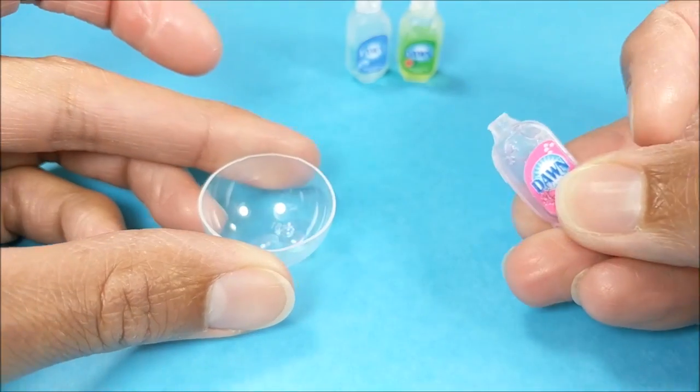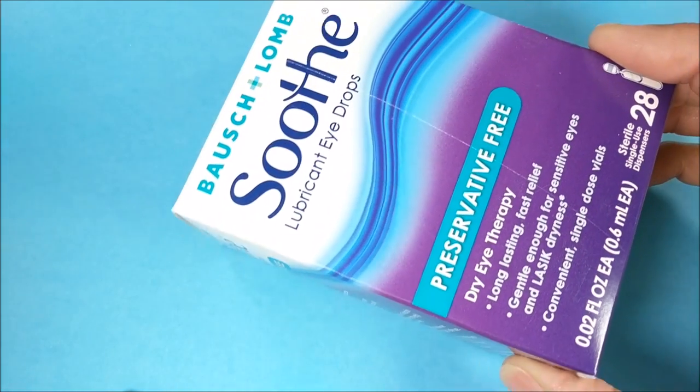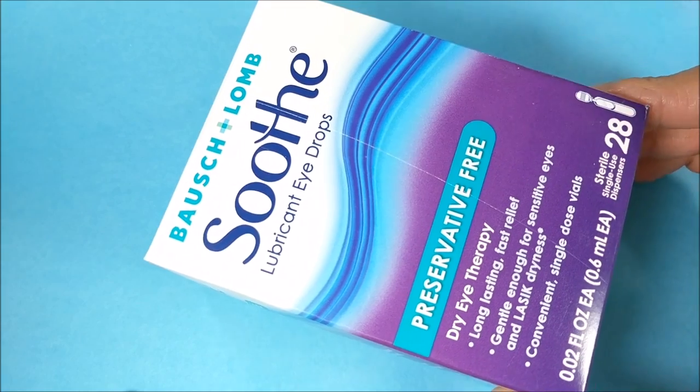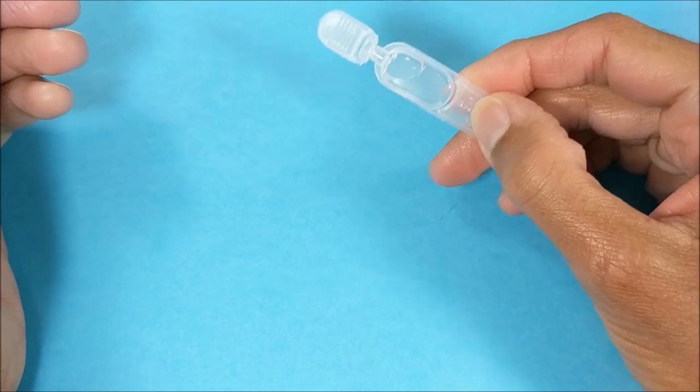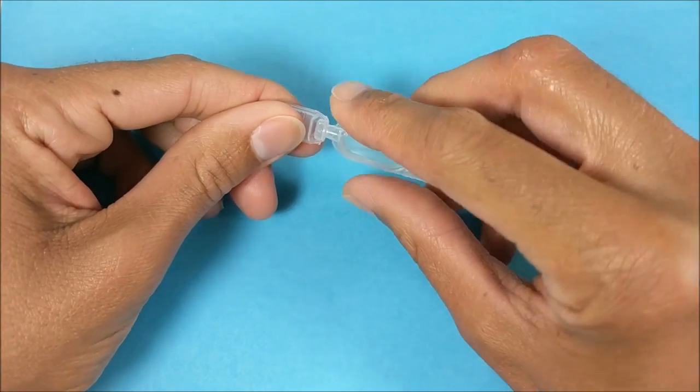Kids, be sure and ask a parent for help before starting this craft. I start here with these disposable eyedrop containers. These little containers are so perfect for so many crafts - you can get them at any pharmacy like CVS or Walgreens.